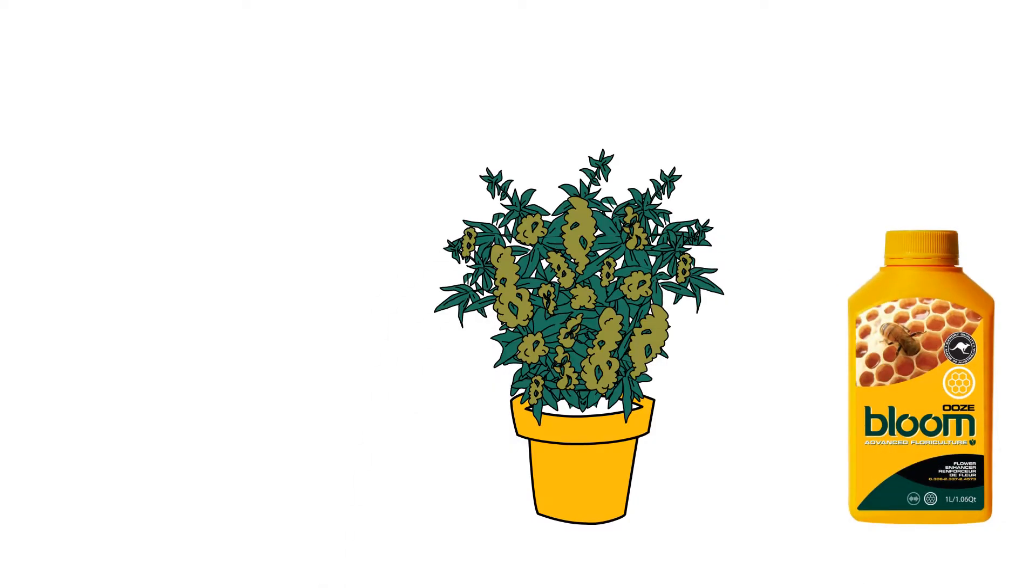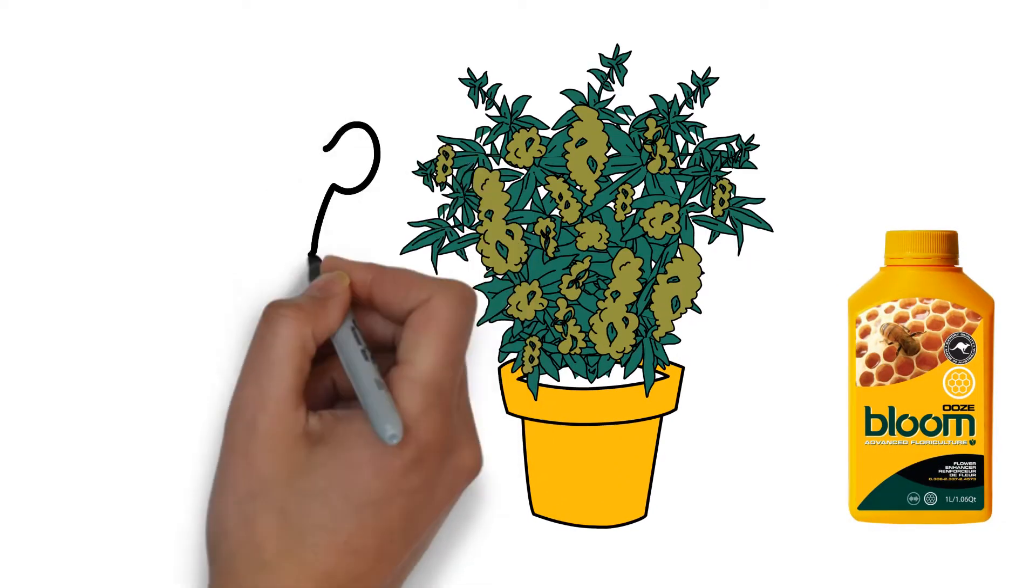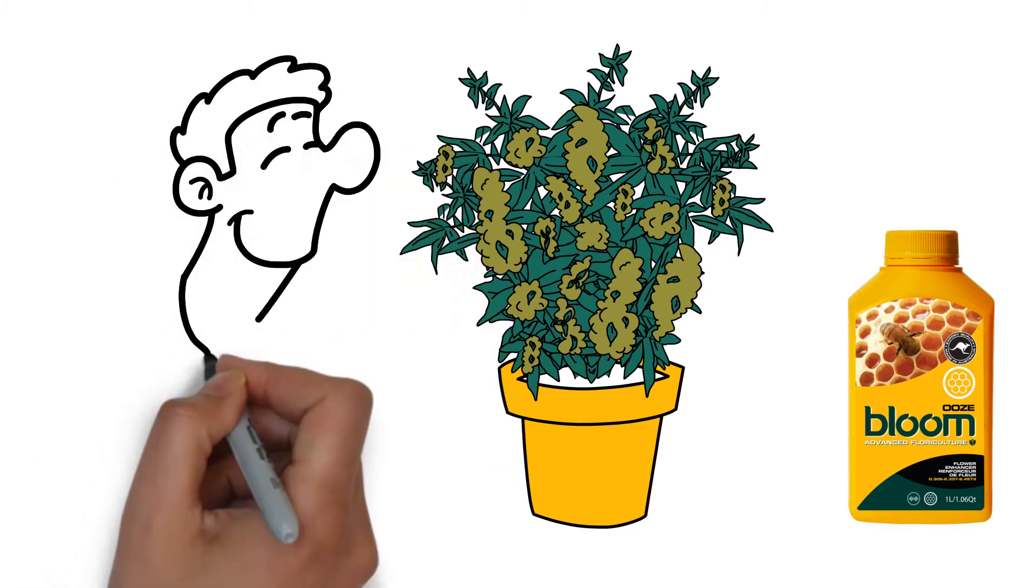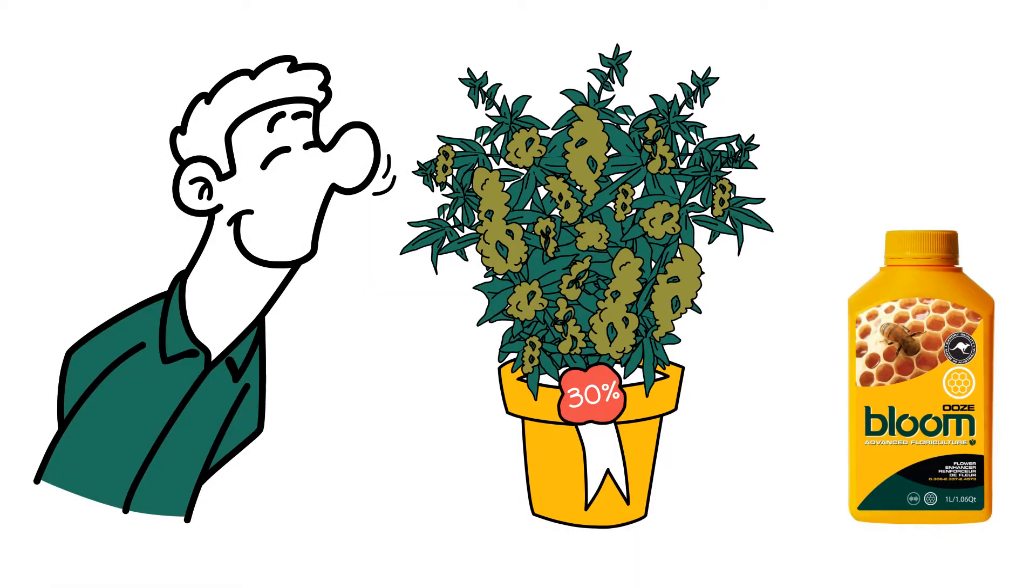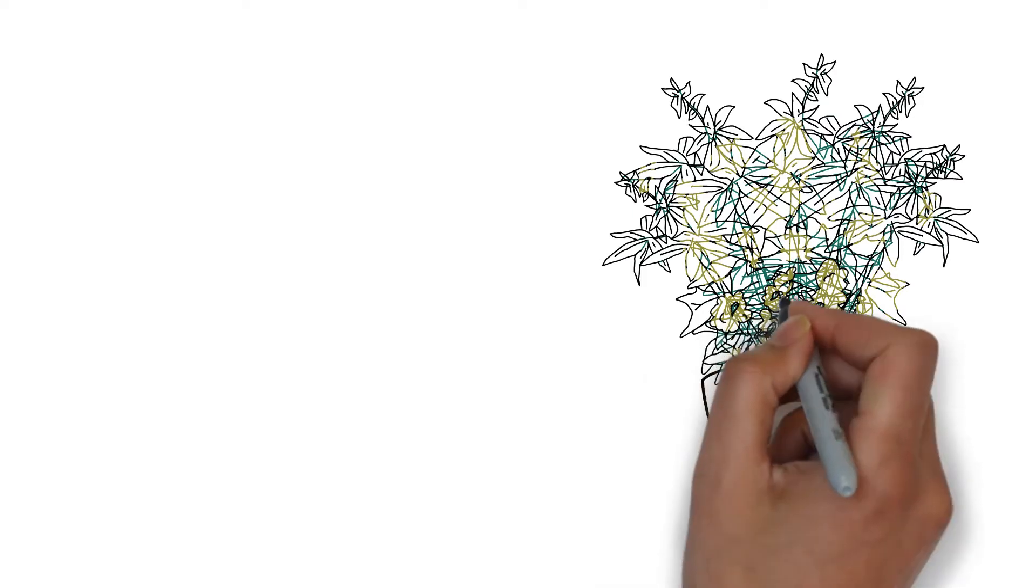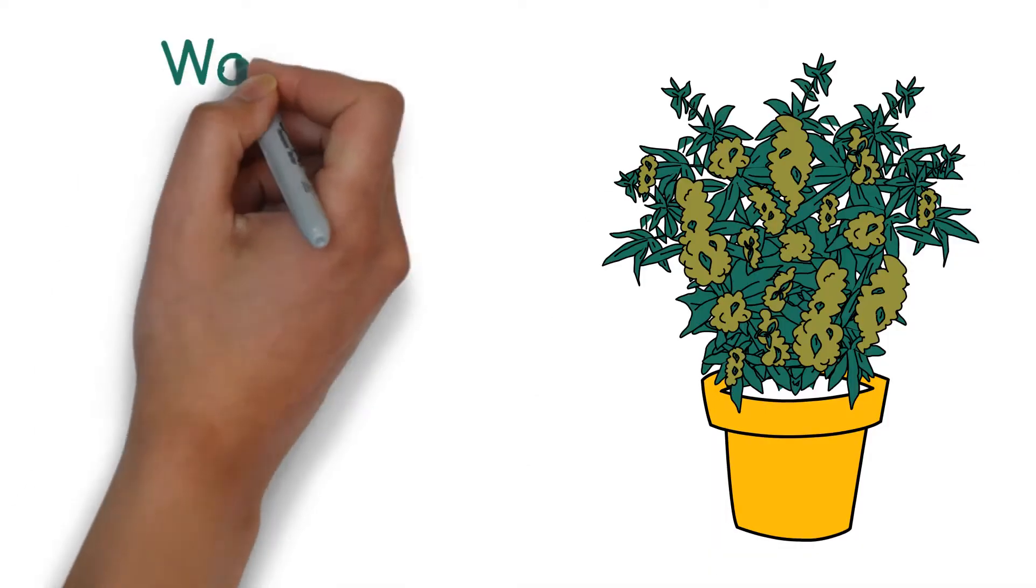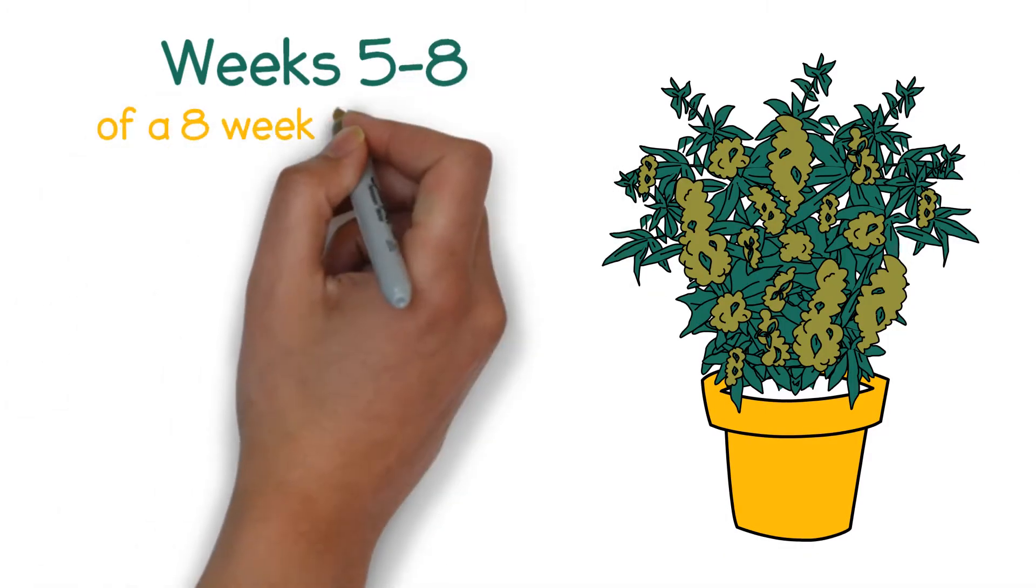Bloom Yellow Bottle Ooze increases not only size but also intensifies flavor and resin of your end product by up to 30%. Feed your plant with Bloom Yellow Bottles Ooze during weeks 5 to 8 of an 8 week flower cycle.